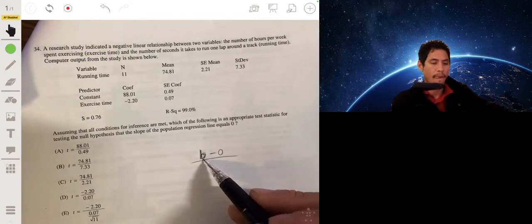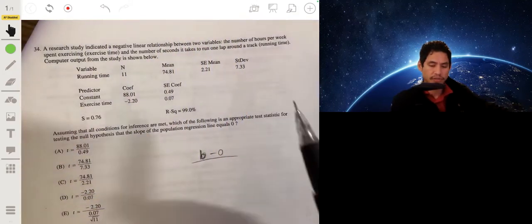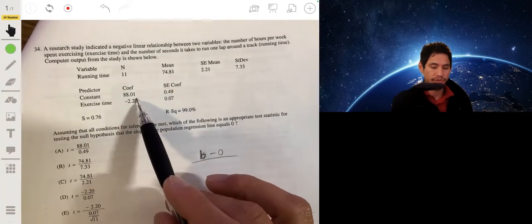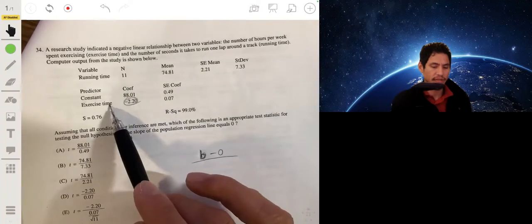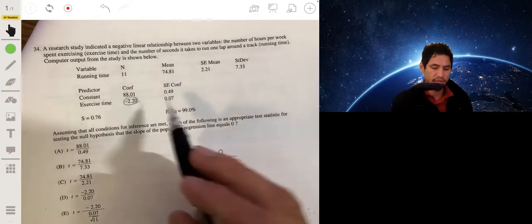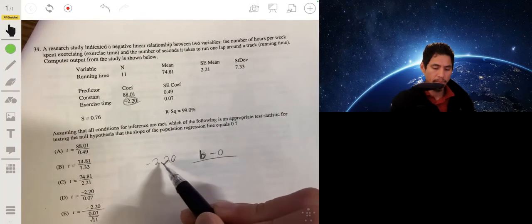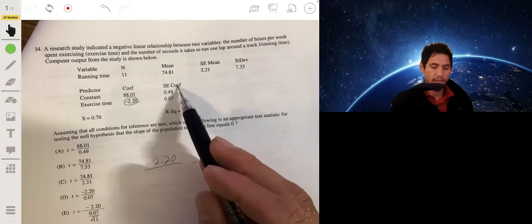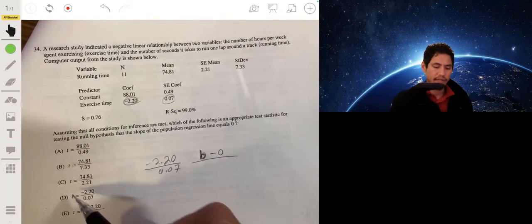So again, let's look at what we're trying to estimate. We're trying to estimate the slope. Here we can look at the coefficient of our variable exercise time is negative 2.2. So that's going to be what's on top. Negative 2.2 minus zero is negative 2.2, obviously divided by the standard error 0.7. So the answer will be D.